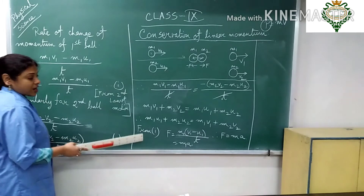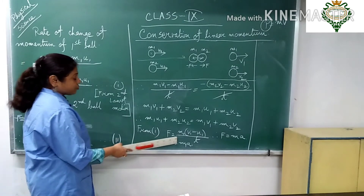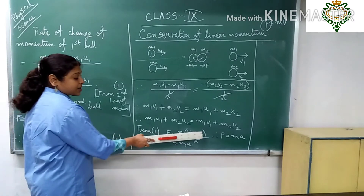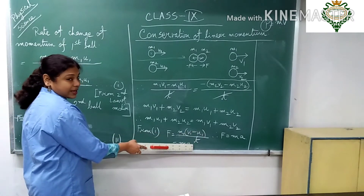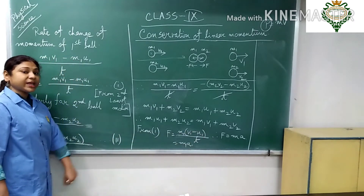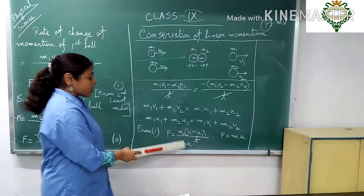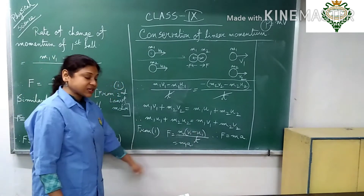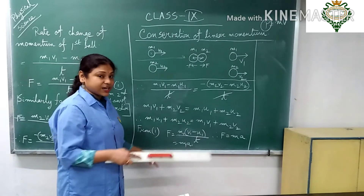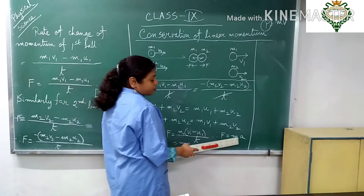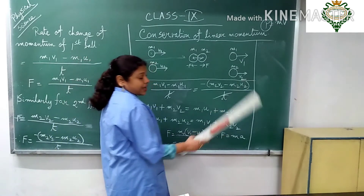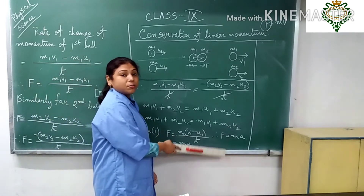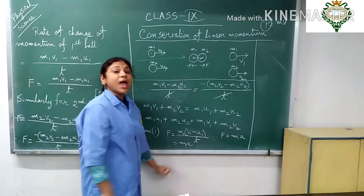From equation one, F is equal to M1·V1 minus M1·U1 divided by T. Taking M1 as common, we get F equals M1 times (V1 minus U1) divided by T. Since (V minus U) divided by T is acceleration A, we can write F equals M1·A1, and in general F equals M times A. That is Newton's second law of motion.